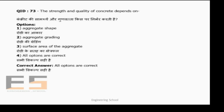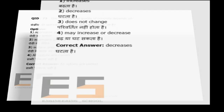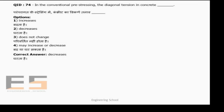Question 73: The strength and quality of concrete depends on aggregate shape, aggregate grading, and surface area of aggregate. All the options are correct — aggregate shape, aggregate grading, and surface area of aggregate.